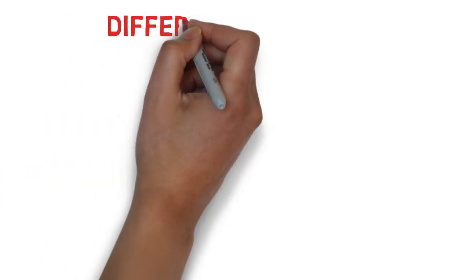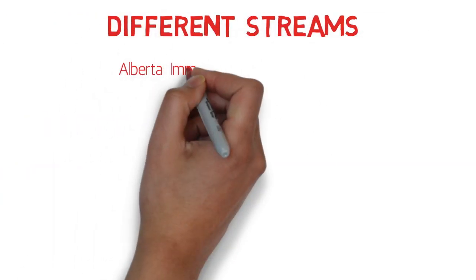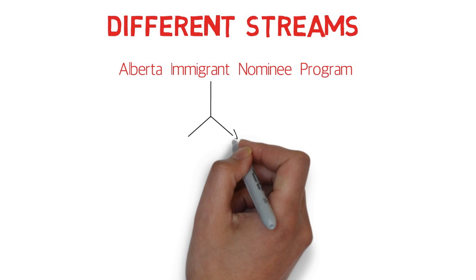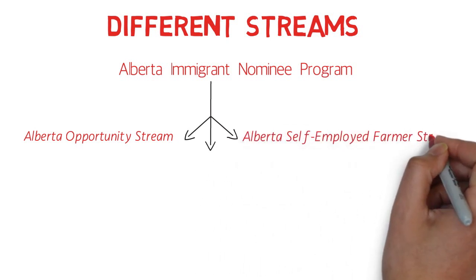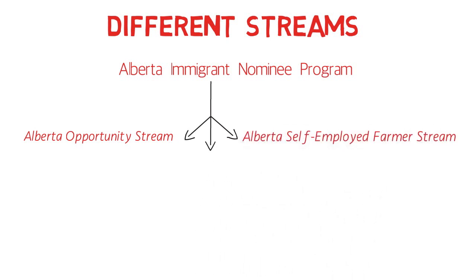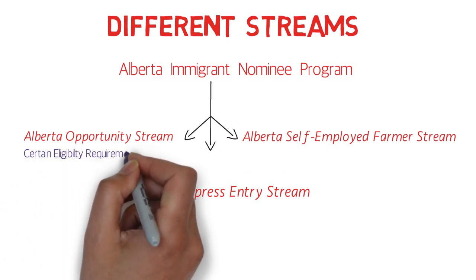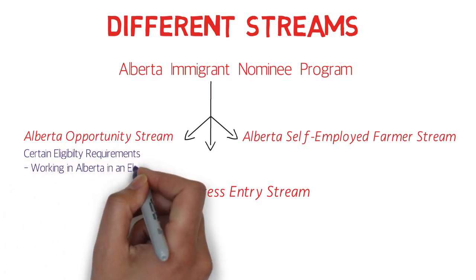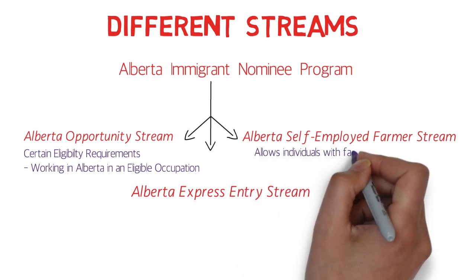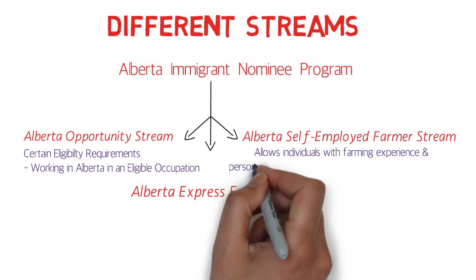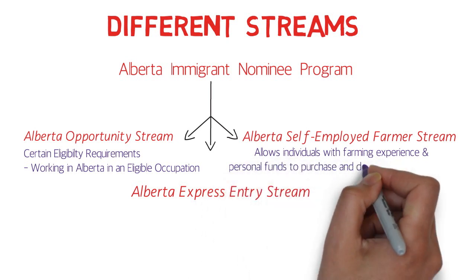Now let's talk about the different streams in the AINP program. The Alberta Immigrant Nominee Program has three streams: the first is the Alberta Opportunity Stream, the second is the Alberta Self-Employed Farmer Stream, and the third is the Alberta Express Entry Stream. The Alberta Opportunity Stream requires working in Alberta in an eligible occupation. The Self-Employed Farmer Stream allows individuals with farming experience and personal funds to purchase and develop a farm in Alberta.